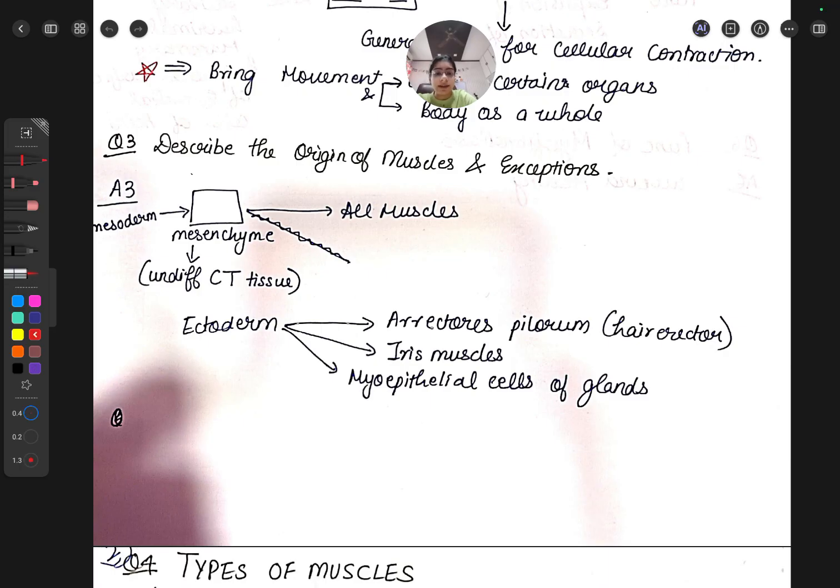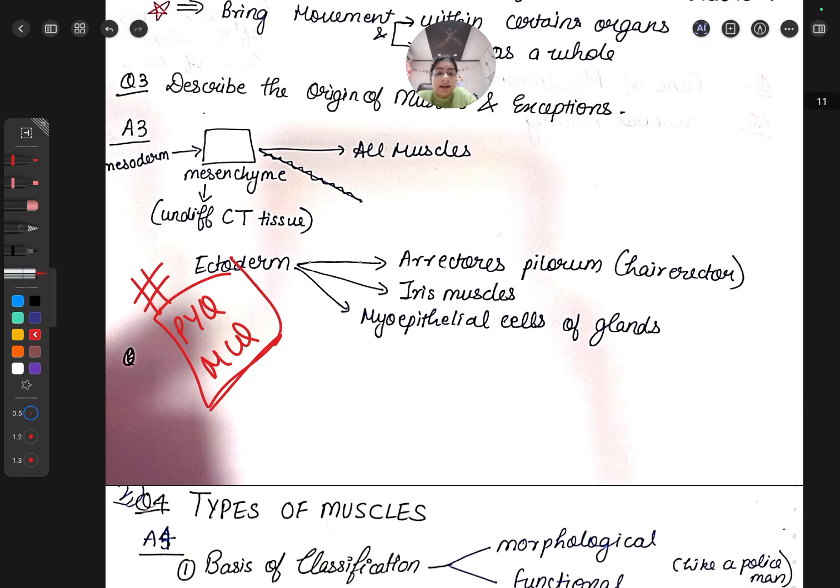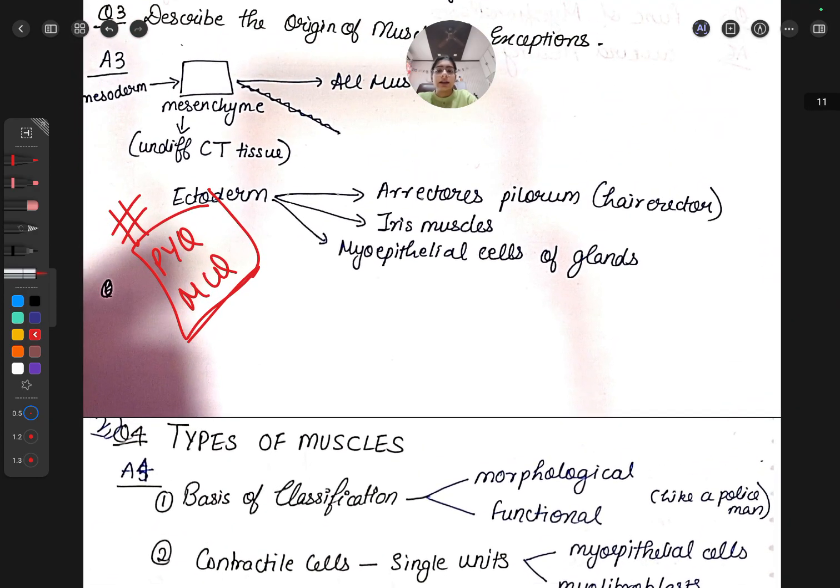All muscles are derived from mesoderm, but there are exceptions - these can come as MCQs. The exceptions are: erector pili (the hair muscle that causes hair to stand when you feel cold), iris muscle of the eyes, and myoepithelial cells of the glands for secreting action.